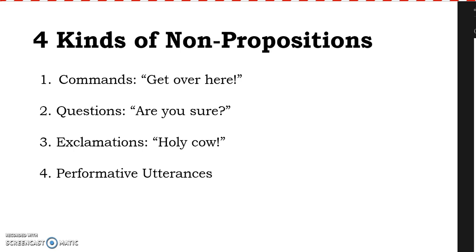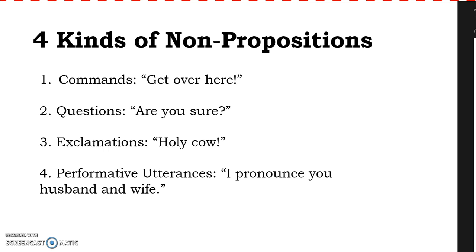'Holy cow!' — an exclamation gives utterance to somebody's emotional state, but it doesn't render a judgment about anything. It simply emits the inner state of the individual speaking. Performative utterances: 'I pronounce you husband and wife.' This is a declaration which has some kind of real effect in its pronouncement. Similarly, it's not a proposition.